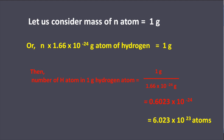Since mass of 1 atom of hydrogen is equal to 1.66 into 10 to the power minus 24 gram, the number of hydrogen atoms in 1 gram of hydrogen is N equal to 1 gram divided by 1.66 into 10 to the power minus 24 gram.